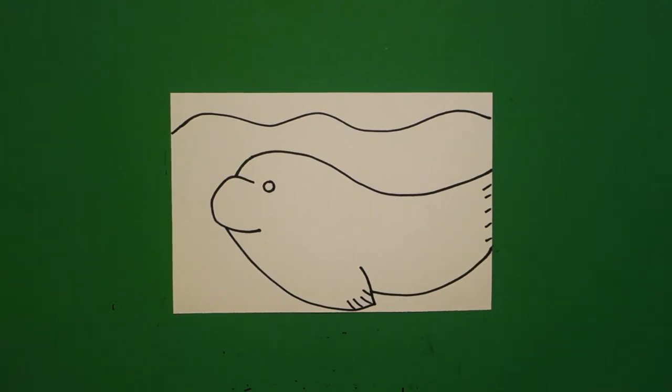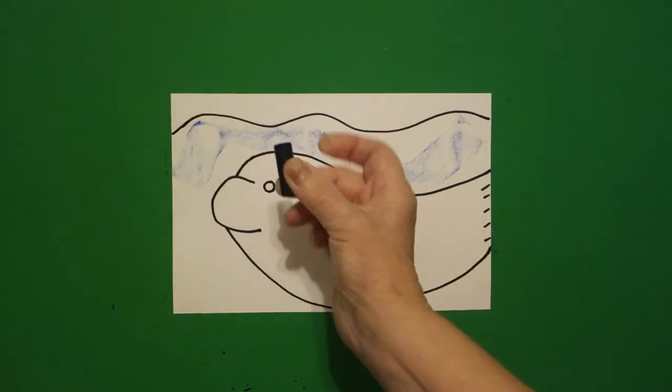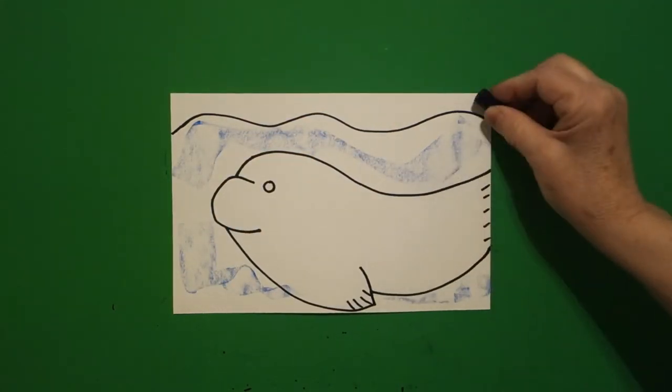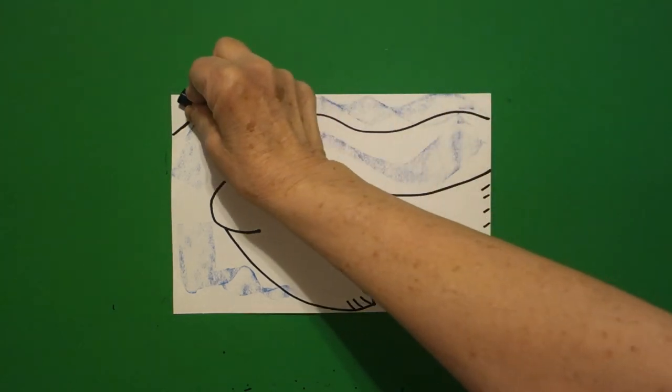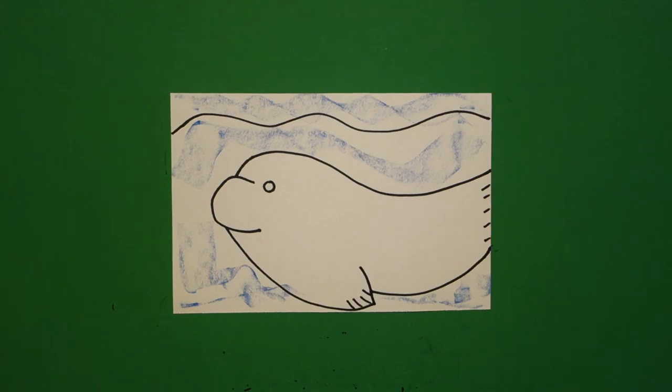This beluga whale is white, so we don't have to worry about that. But I'm going to get my blue, flat crayon and color in my ocean and my sky. That's all. All right, let's see what this looks like all colored in.